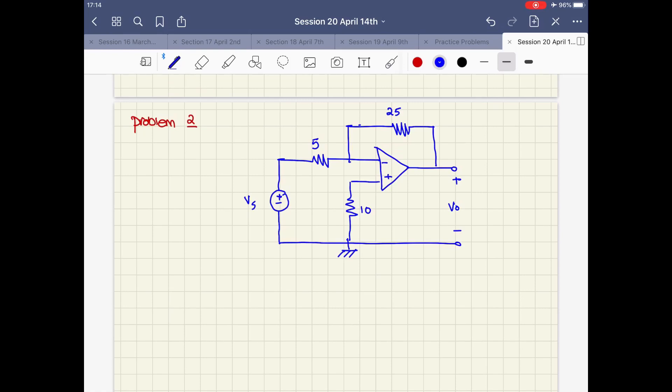In this problem, they ask us to find vo over vi, which is the gain of the op-amp. So we need to find vo over vi.